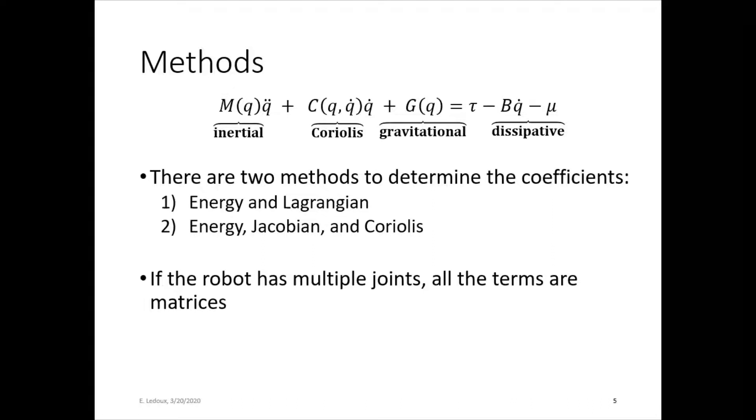There are two methods to determine the coefficients that go into this equation. The first method is using energy and Lagrangian. This is pretty straightforward to do if your robot only has one joint. Sometimes you can use it for more than that, but if your robot has a lot of joints, you want to use the second method, where you combine energy with the Jacobian and the Coriolis. So there will be special formulas on how to get those. And remember, if the robot has multiple joints, all the terms are matrices.